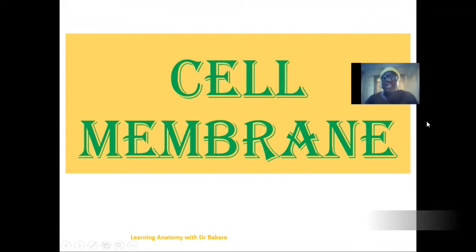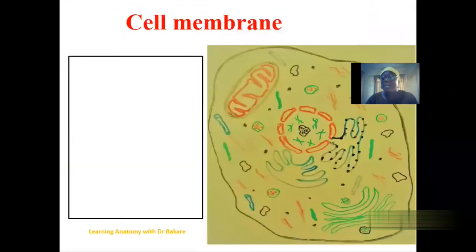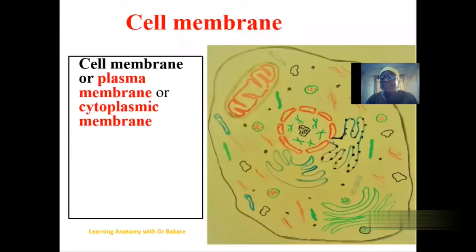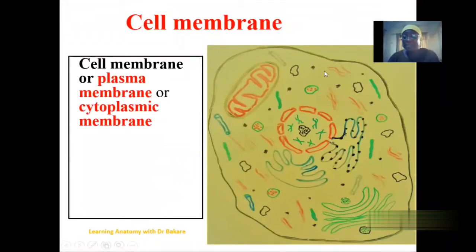Welcome to my channel. Let's look at the cell membrane. The cell membrane is the boundary that surrounds the cell. It is also referred to as the plasma membrane or the cytoplasmic membrane, which means the membrane of the cytoplasm. And this is the cell membrane, highlighted in black.